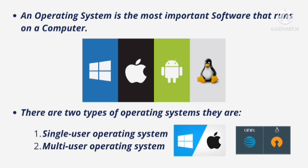We have two types of operating systems. They are single user operating system and multi user operating system. Windows and Mac OS, which is Apple, are single user operating systems. Linux and Unix are multi user operating systems.